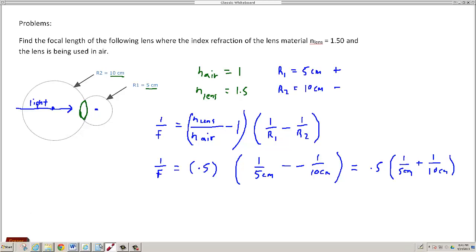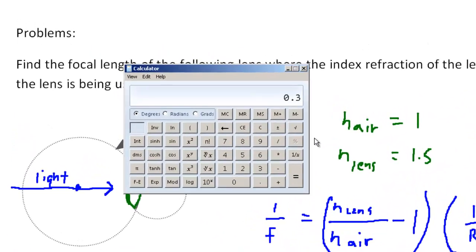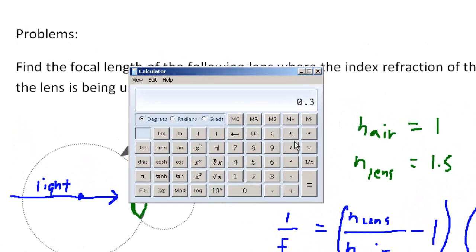Let's get the calculator out. I'm going to plug in 5 centimeters, take the reciprocal of that and that gives me 0.2. We're going to add that to the reciprocal of 10 centimeters, so we're plugging in 10, 1 over x, and we're adding those two things together and that gives us 0.3.